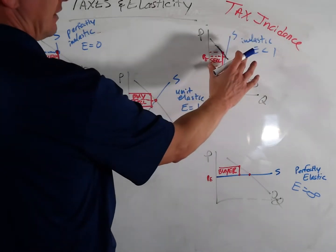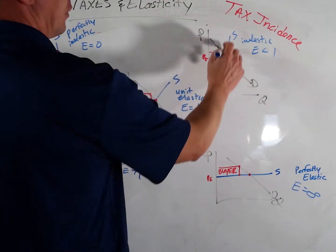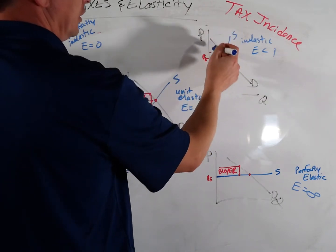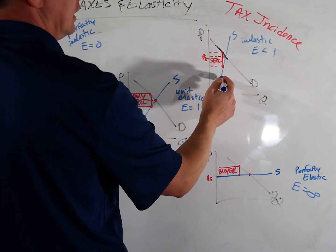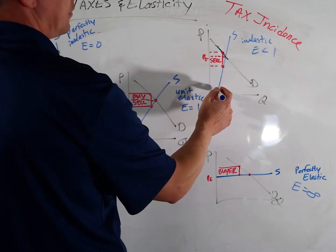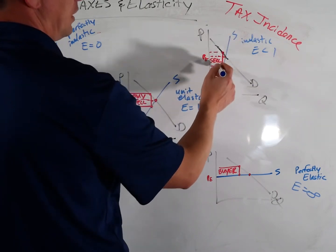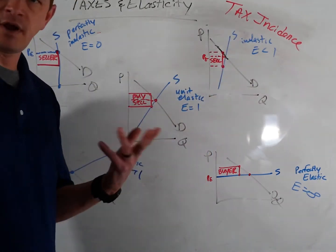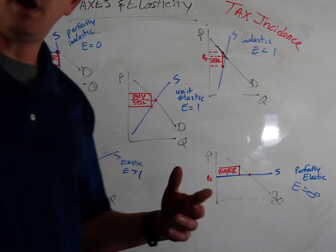If you have an inelastic supply, less than one, you have a very vertical supply curve and a pretty unit elastic demand. These suppliers are pretty much, no matter what the price, they're going to supply something. That tells me that they don't have a lot of options. So no matter what, they're going to do their thing.